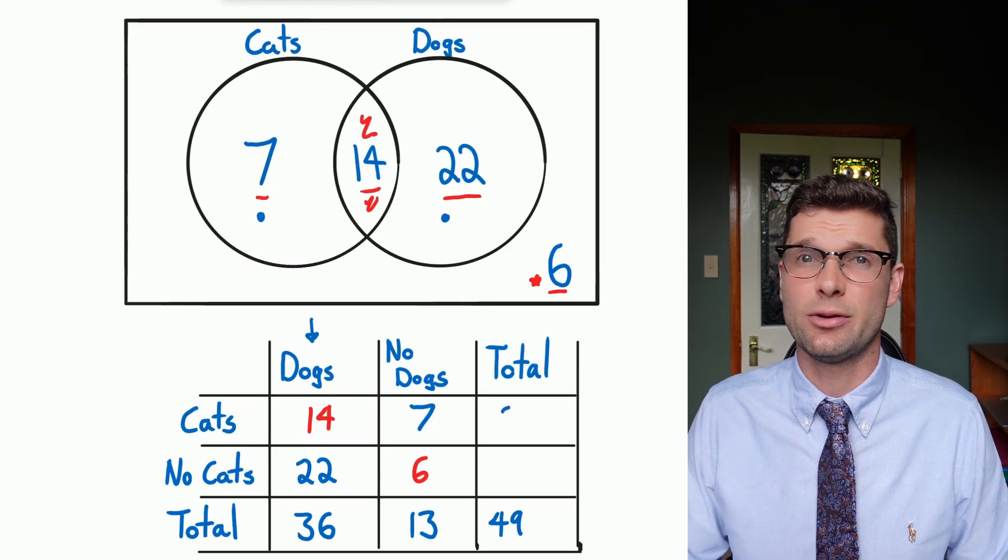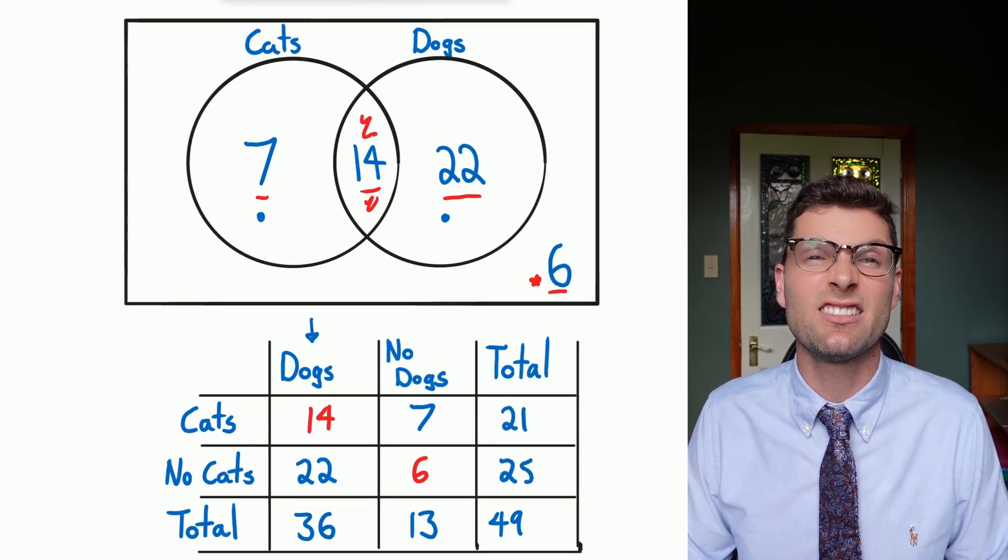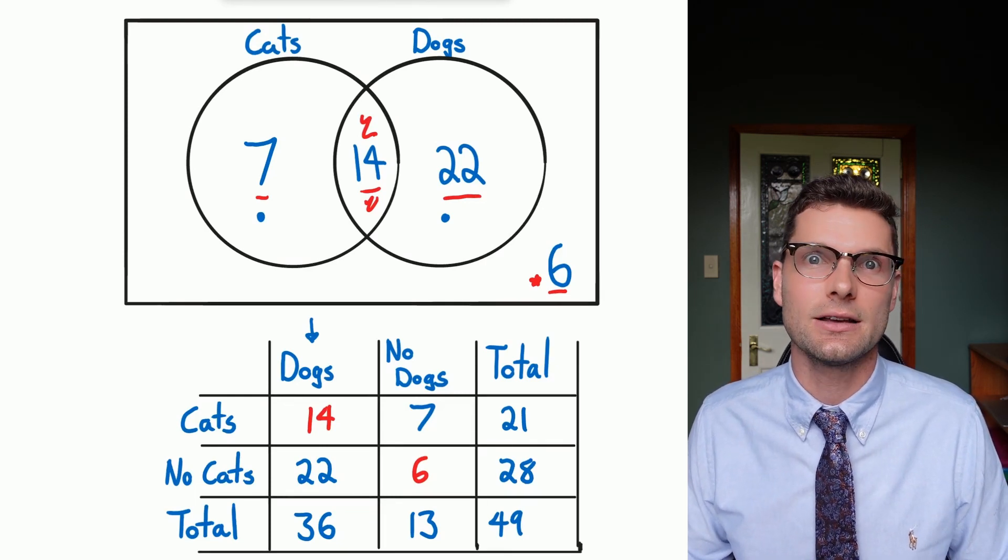To find out how many people have a cat, 14 plus seven is 21. And then just make sure all of these add up correctly. So I've got 28 directly under that because I know 49 people were asked.